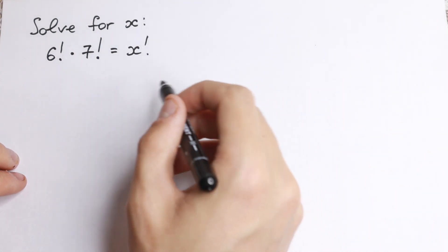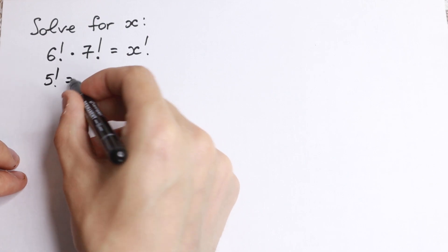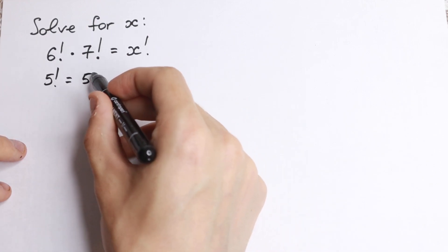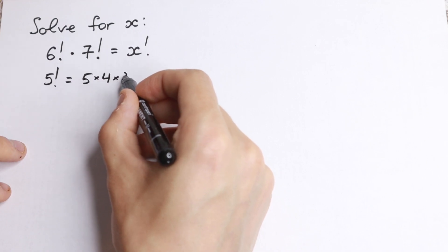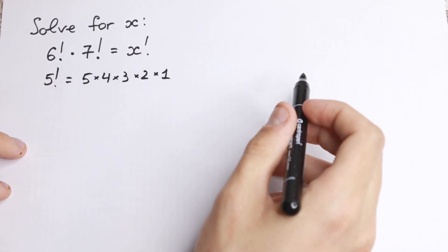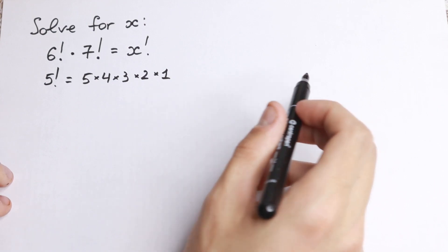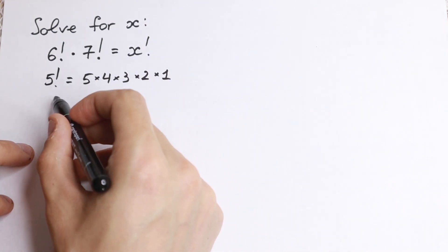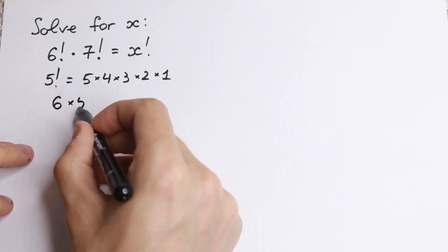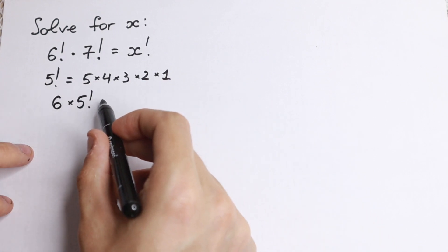So firstly, for example, we have 5 factorial. What is 5 factorial equal to? We know it is the product 5 times 4 times 3 times 2 times 1 — that is the classic case. But what will happen if we multiply 5 factorial by 6? So 6 times 5 factorial — what will happen?